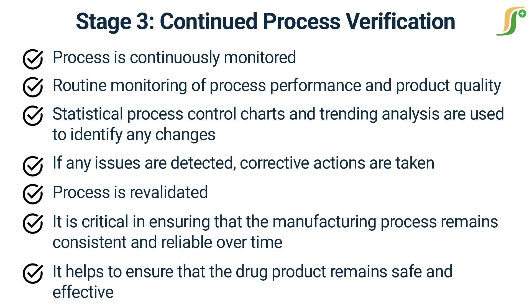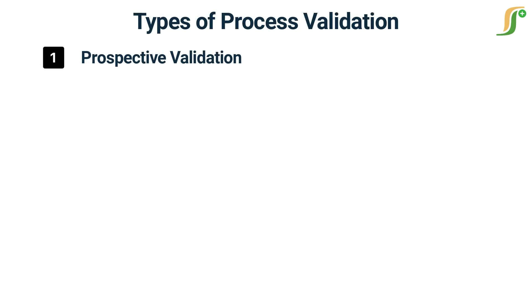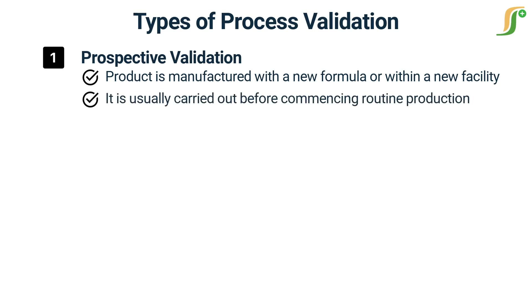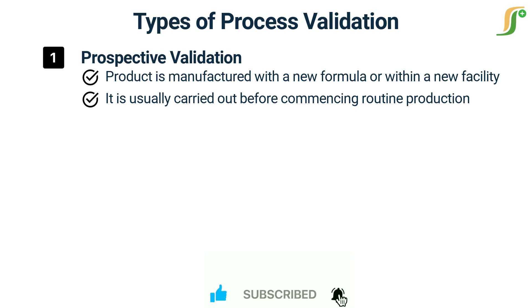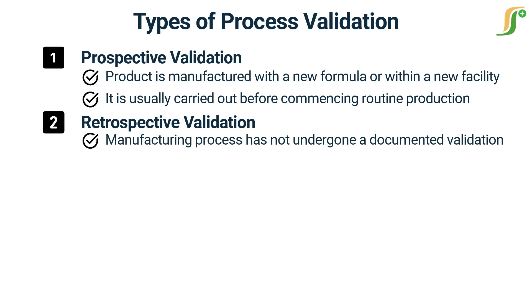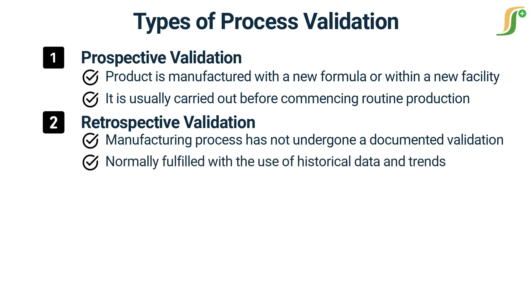There are four main types of process validation. The first is prospective validation, implemented when any product will be manufactured with a new formula or within a new facility — also known as pre-market validation. It is usually carried out before commencing routine production and is considered the foundational type of validation. The second type is retrospective validation, conducted only when the manufacturing process has not formally undergone a documented validation. It is normally fulfilled using historical data and trends analysis to provide evidence that the process is in its intended state. In most cases, it is no longer an acceptable approach because any product should have already been validated before commercial distribution.